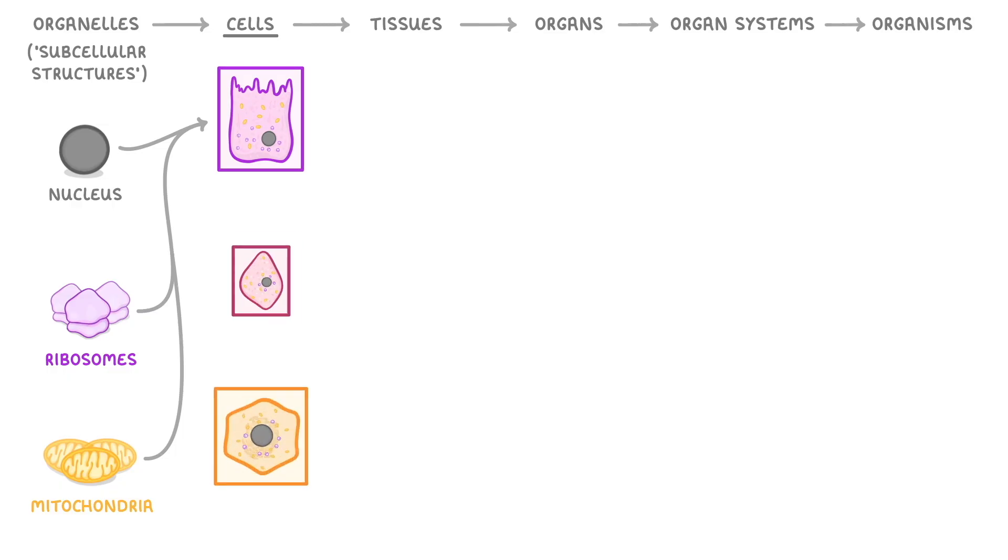Cells themselves come in all sorts of different shapes and sizes, and contain different combinations and numbers of the organelles that we just mentioned. We call the different types of cells specialized cells, and they include things like epithelial cells, muscle cells, and different types of glandular cells.